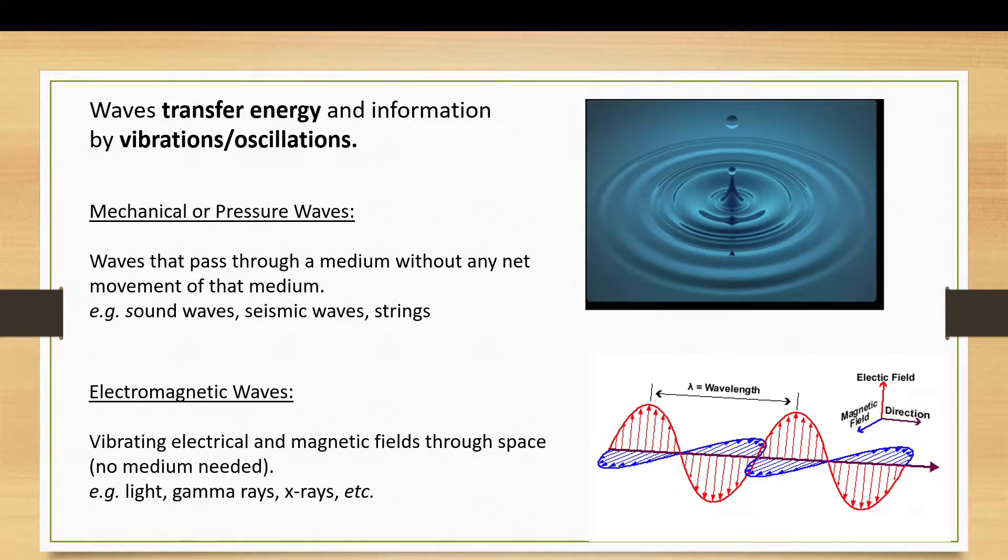Then we have electromagnetic waves, which are vibrations within electrical and magnetic fields. These do not require a medium to travel through. Examples, of course, are the electromagnetic spectrum: light, gamma rays, x-rays, etc.